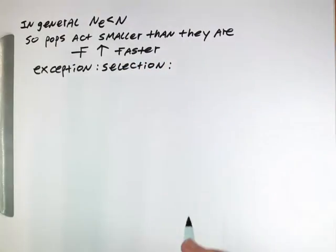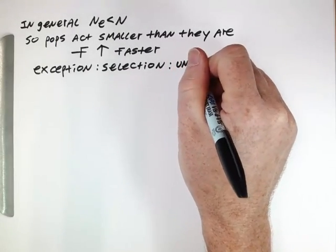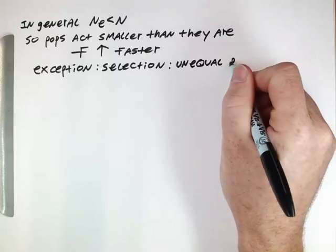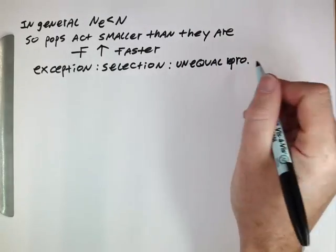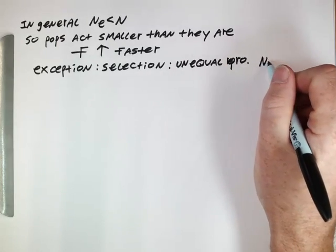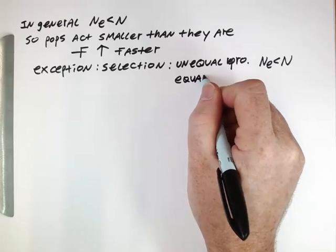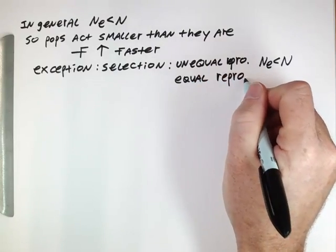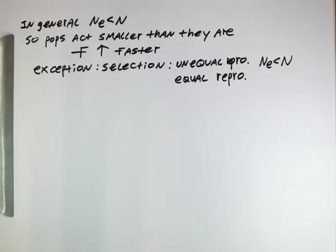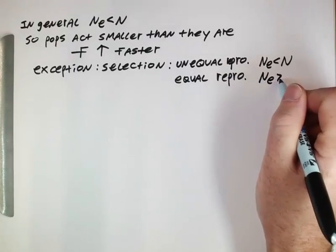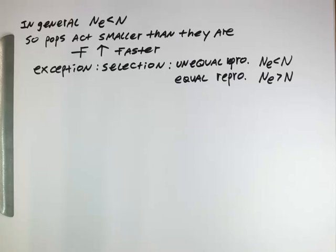In general, with selection, we're thinking about consistently unequal reproduction. If we have selection, it's actually like the other factors where the effective population size would be less than the actual population size. But if we have some sort of selection that ends up causing roughly equal reproduction, or reproduction that is more equal between different entities than would be expected just by a random process, under those conditions the effective population size can actually be larger than the census population size.